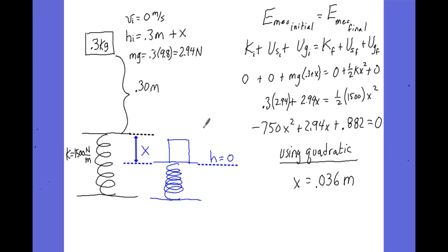Notice that at no time in the problem did I need to know how fast the object was moving. By strategically choosing the highest point and the lowest point as initial and final positions, the object was at rest at both locations so there was no kinetic energy. The intermediate values of kinetic energy are not needed to find how far the spring was compressed.